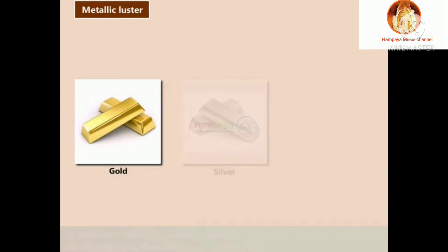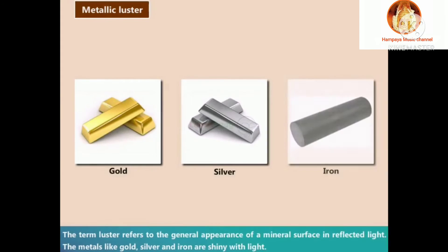Metallic luster: The term luster refers to the general appearance of a mineral surface in reflected light. Metals like gold, silver, and iron are shiny with light.